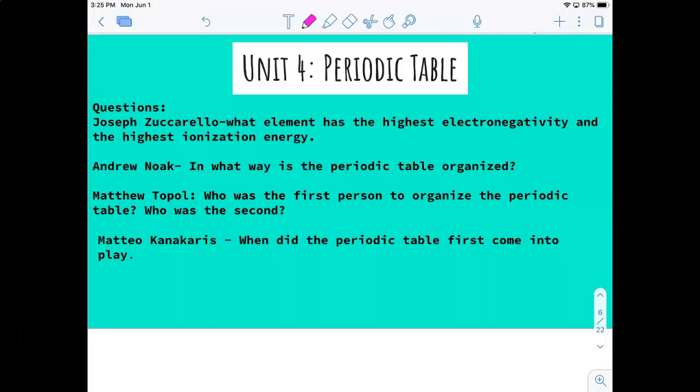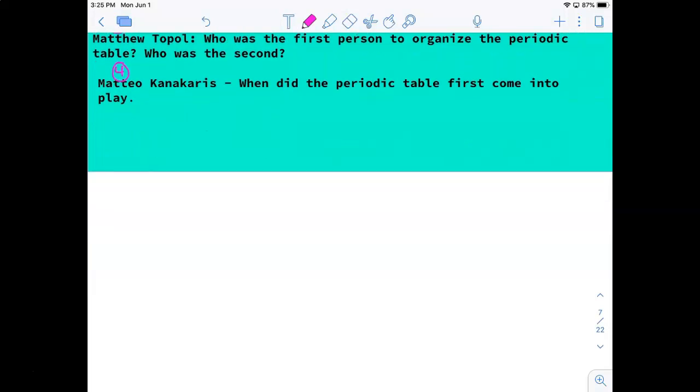Hi guys, so for the periodic table unit we have a couple questions. I'm going to number them just so that when I do some examples on the next page we can keep everything organized. So Joe's question: what element has the highest electronegativity and ionization energy? In general, there are usually questions about trends on the periodic table.